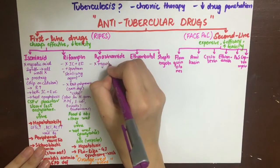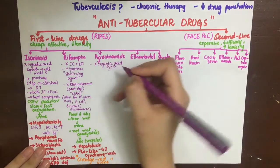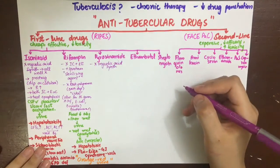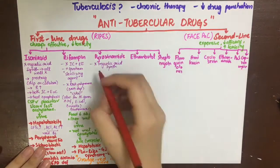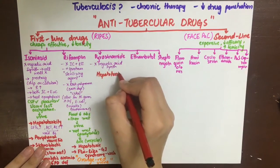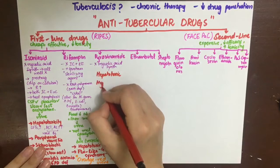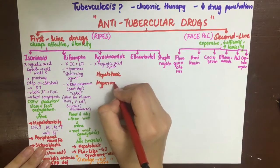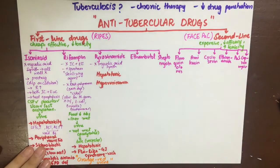Pyrazinamide also acts by inhibiting mycolic acid synthesis, but through a different mechanism than isoniazid. It causes dose-dependent hepatotoxicity and hepatitis. It also causes hyperuricemia because it competes with uric acid for secretion in the kidney.